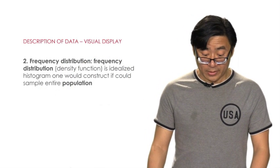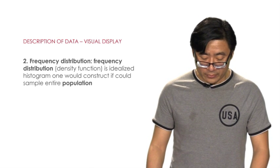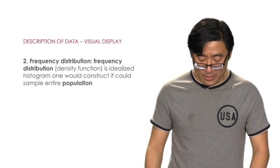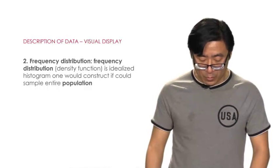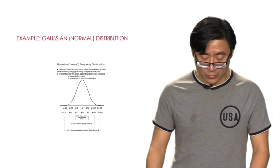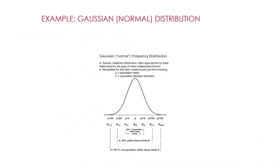We can also use the frequency distribution, sometimes called density distribution, to visually display the data. The frequency distribution is an idealized histogram that one could construct if the entire population could be sampled. Here is one example of the Gaussian or normal distribution density curve, which shows the whole range of data from negative infinity to positive infinity, since this is for a continuous variable.